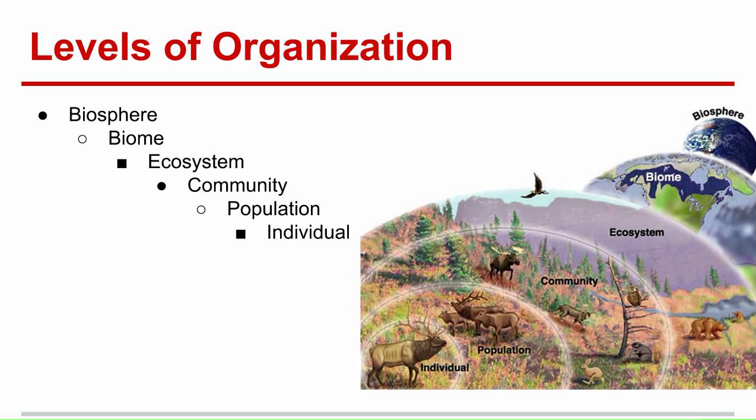These interactions happen within levels of organization. The largest level, the biosphere, consists of the planet itself, seven miles above the surface of Earth and about eleven miles below. Below the biosphere are biomes, which are groupings of similar ecosystems near each other. Ecosystems are a collection of organisms in one place.